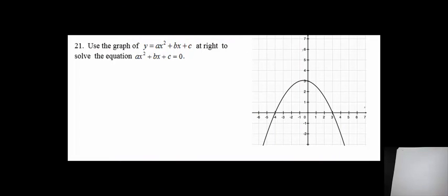In problem 21, use the graph to solve ax² + bx + c = 0. When the quadratic equals 0, solutions are the x-values where the curve crosses the x-axis (the x-intercepts). Here the curve crosses the x-axis at two points: positive 3 and negative 4. So the solutions are x = 3 and x = -4.